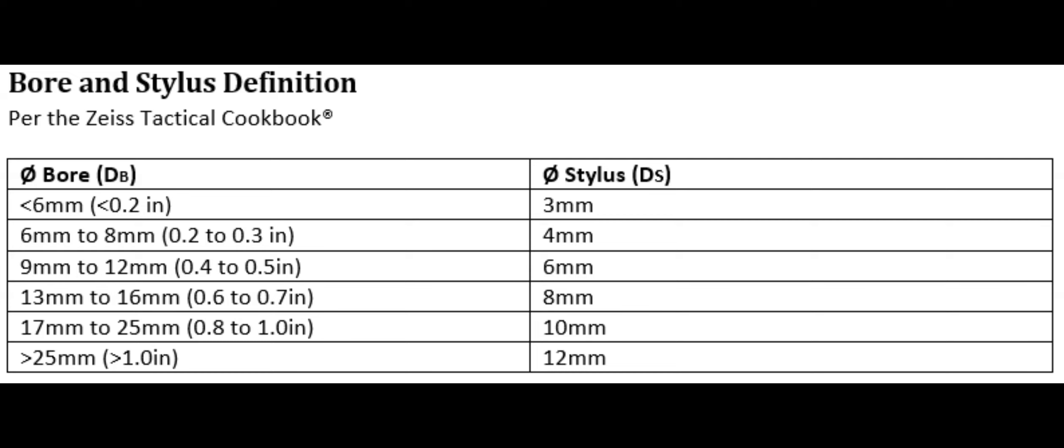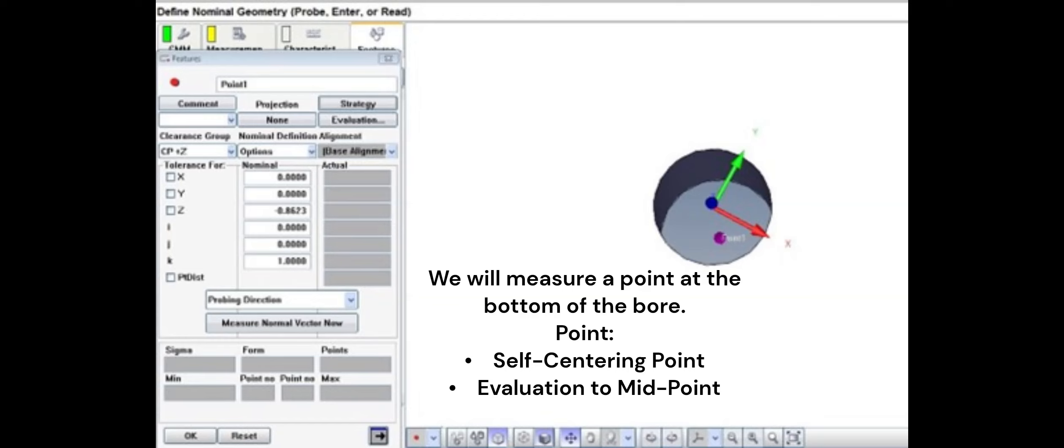The bore and stylus definition per the Zeiss cookbook. Measure a self-centering point at the bottom of the bore.